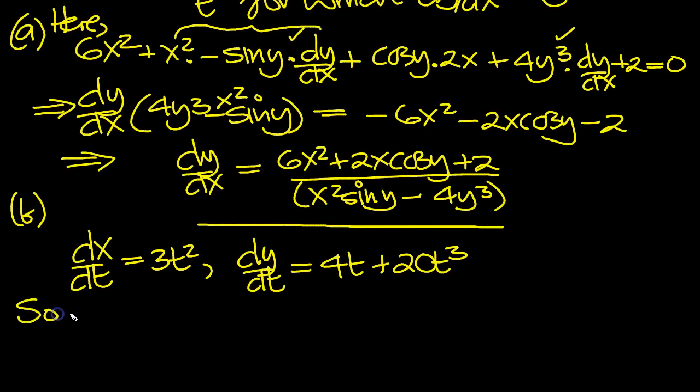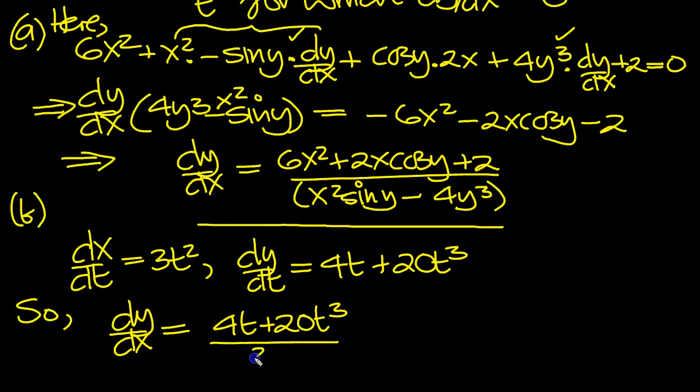So dy/dx then. Divide one by the other, divide this by this of course. 4t plus 20t cubed over 3t squared. There's a t common top and bottom, so we can cancel by t.